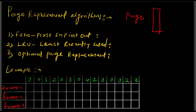For example, say main memory has four slots and the page reference string is: P1, P2, P3, P4, and P5. P1 will be loaded into an empty slot, then P2, P3, and P4. Now the next required page is P5, but memory is full. To load this page, the processor must anyhow load P5, so one of P1, P2, P3, or P4 must be replaced.